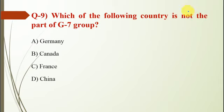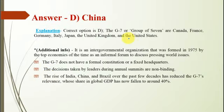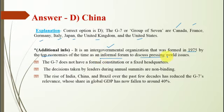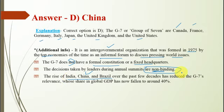Question number 9: Which of the following countries is not part of the G7 group? The correct option is D — China is not part of G7. G7 includes Canada, France, Germany, Italy, Japan, the UK and the US. It is an intergovernmental organization formed in 1975 by the top economies of the time as an informal forum to discuss pressing world issues. The G7 does not have a formal constitution or a fixed headquarters, and decisions taken during the annual summit are non-binding. The rise of India, China and Brazil has reduced G7's relevance, with its share in global GDP falling to around 40%. There are talks of including India in the G7 group.